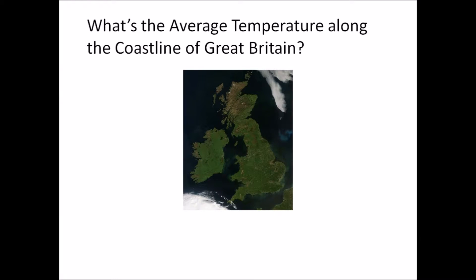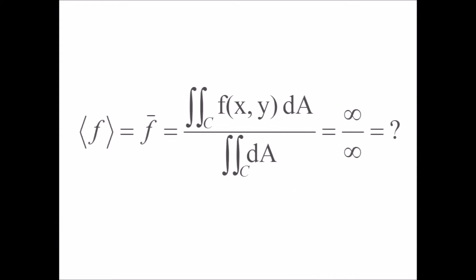Recalling how one finds averages — specifically the formula for the mean of a dataset — the idea of integrating along the coastline to find the mean temperature comes to mind. However, looking at the traditional formula for the mean of a quantity with respect to a dataset does not instill much hope, since we already know the length of the coastline isn't well-defined at the infinitesimal scale. We need a better definition of the integral.